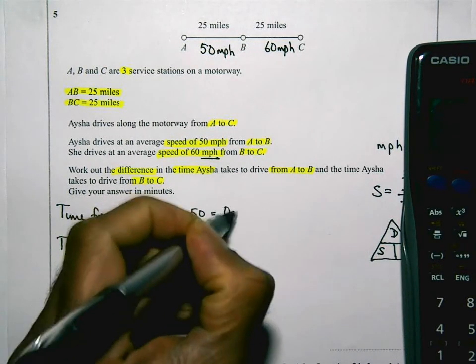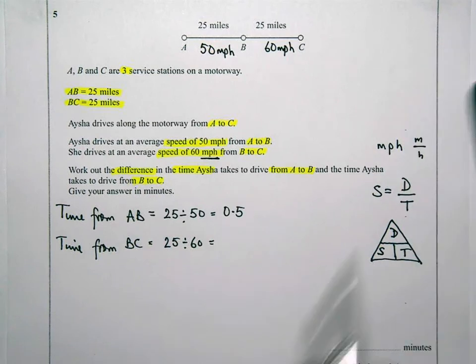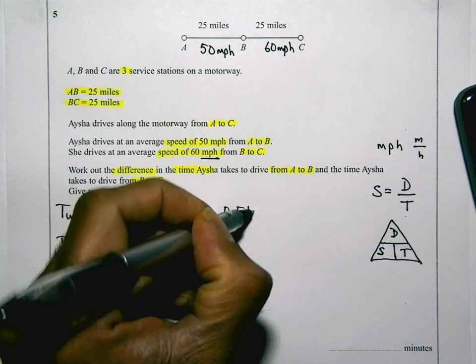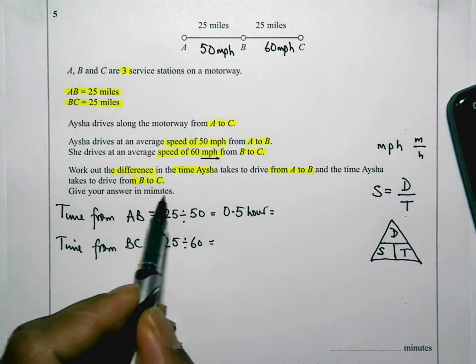0.5. But remember here, the speed was miles per hour. So that's 0.5 hours. And I'm going back to the question. The question says, give your answer in minutes.